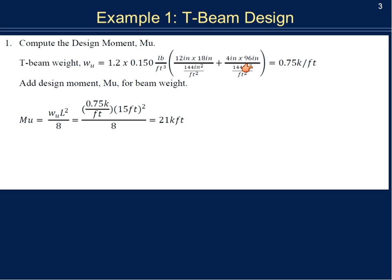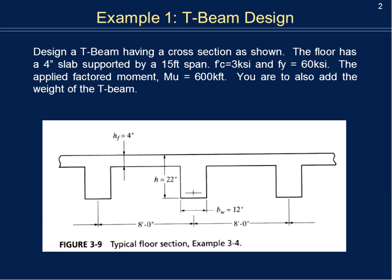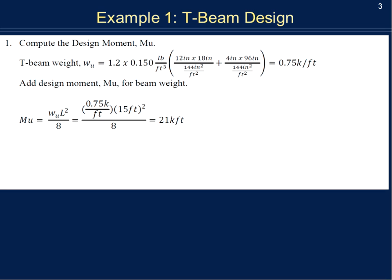We also add the weight of the slab, which is 4 inches by 96 inches. That 96 inches is 8 feet — each T-beam is responsible for 48 inches on either side, for a total of 96 inches. We convert that into feet squared. When we calculate that, we get a total of 0.75 kips per linear foot.